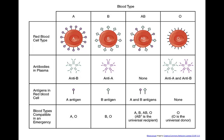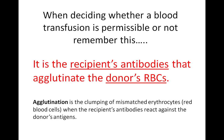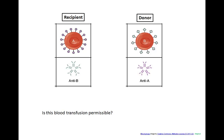Let's go through some examples and see why. When deciding whether a blood transfusion is permissible, remember: it is the recipient's antibodies that agglutinate the donor's red blood cells. Agglutination is the clumping of mismatched red blood cells when the recipient's antibodies react against the donor's antigens. In this first example, type A blood is the recipient and type B is the donor. Does type A have an antibody against type B's antigens? Yes, it does. So this transfusion is not permissible because the recipient's anti-B antibodies will agglutinate the donor's B antigens.